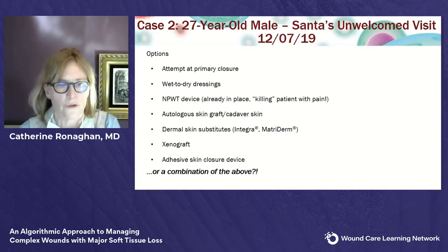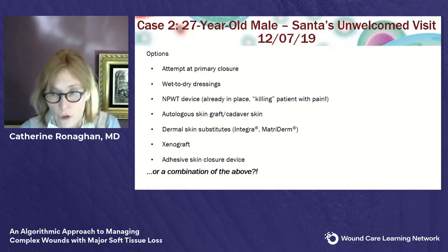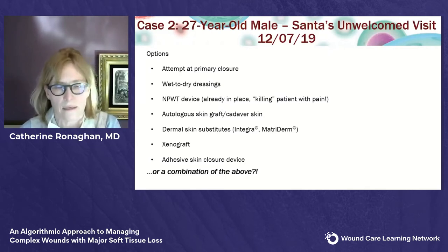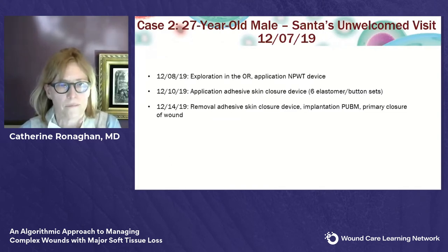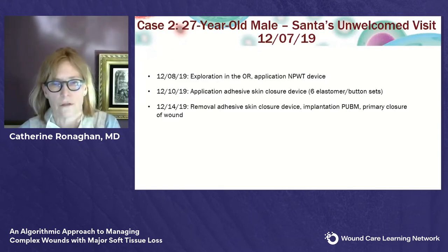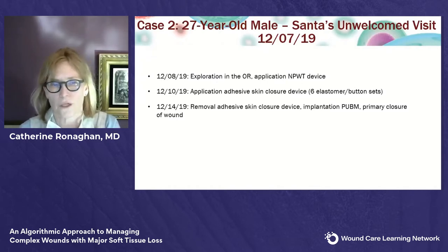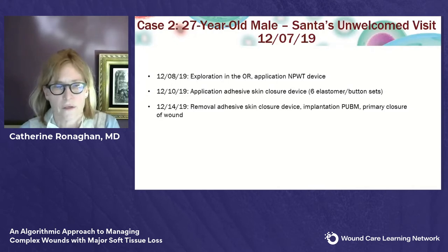Other options include skin grafting, cadaver skin, dermal skin substitutes, xenografts, or an adhesive skin closure device — or a combination. This gentleman went to the OR on the 8th when he arrived to our institution; they debrided and applied the negative pressure device. He was in such discomfort that my colleague asked if I had other ideas. On the 10th, we applied the adhesive skin closure device. On the 14th, we removed it, implanted the porcine urinary bladder matrix, and did a primary closure — off-label, but with over 10 years of experience using this material with great success.